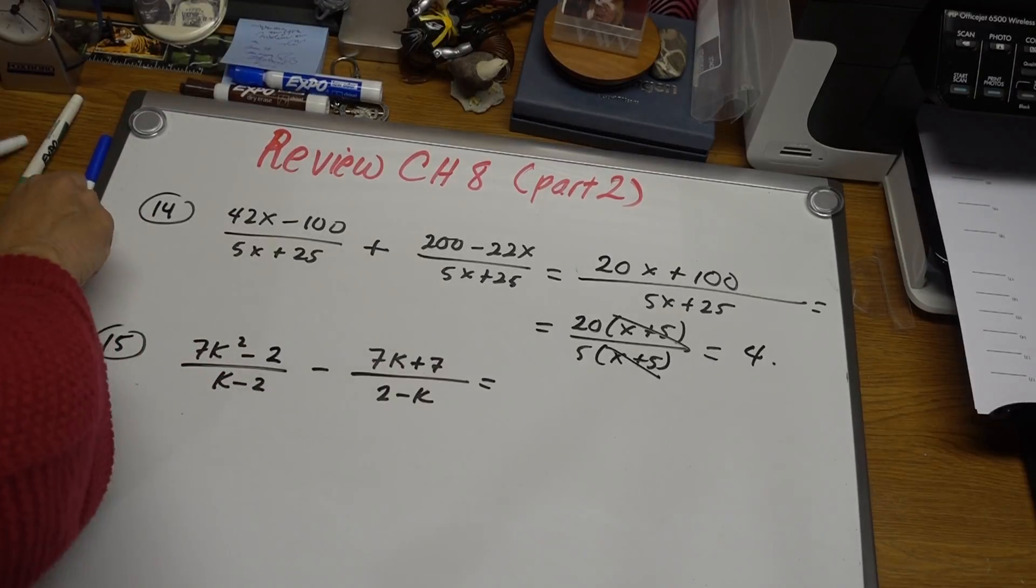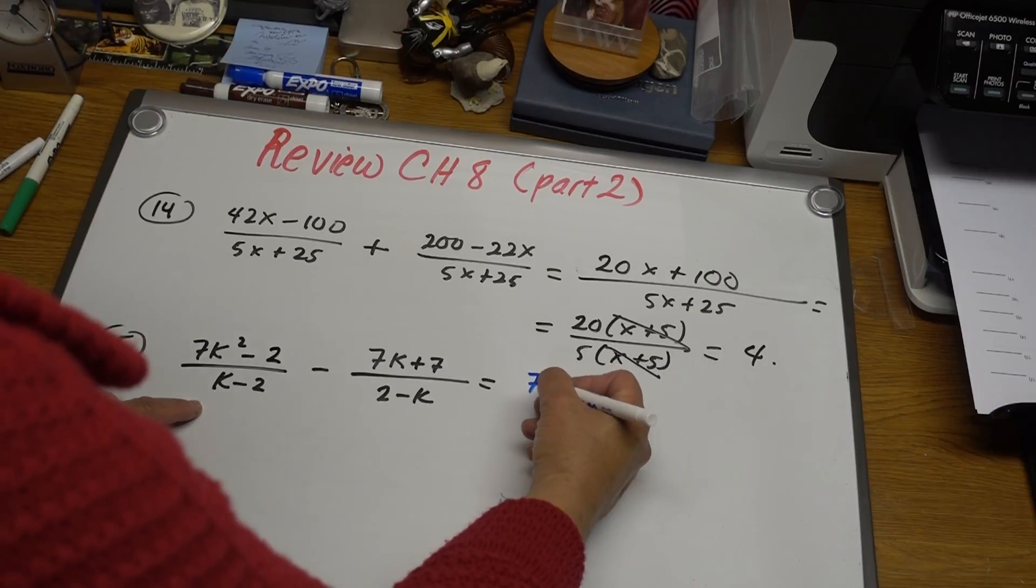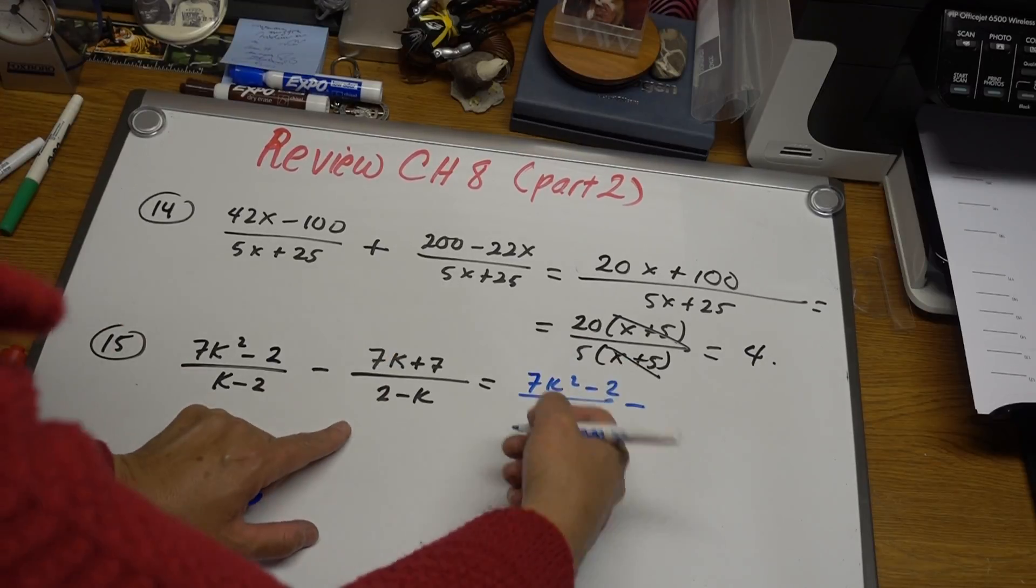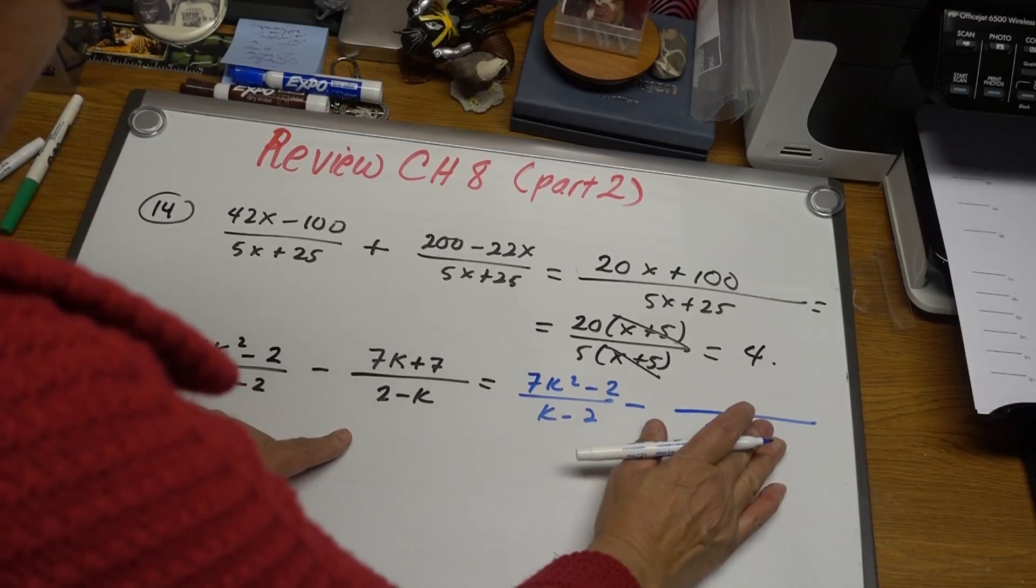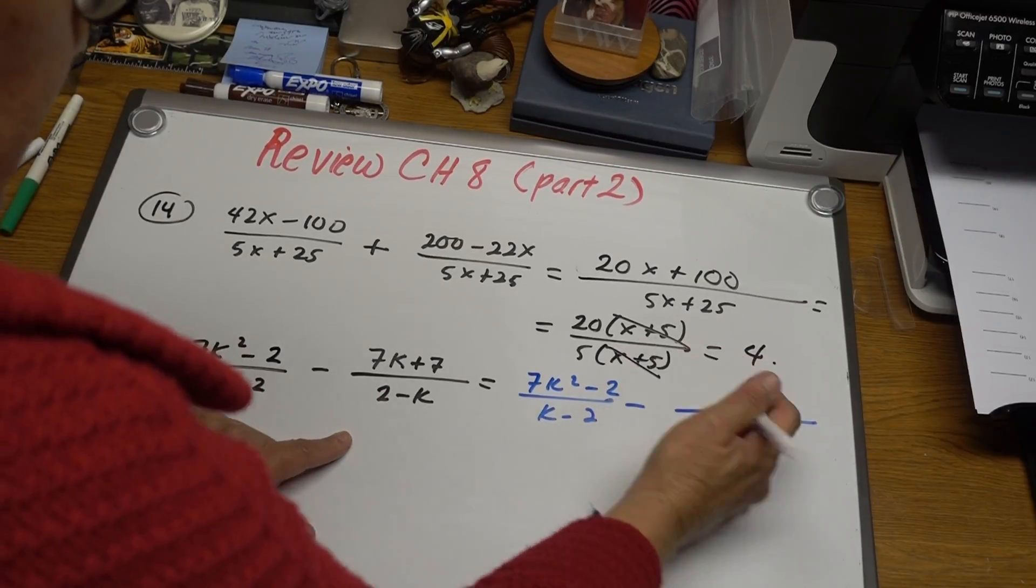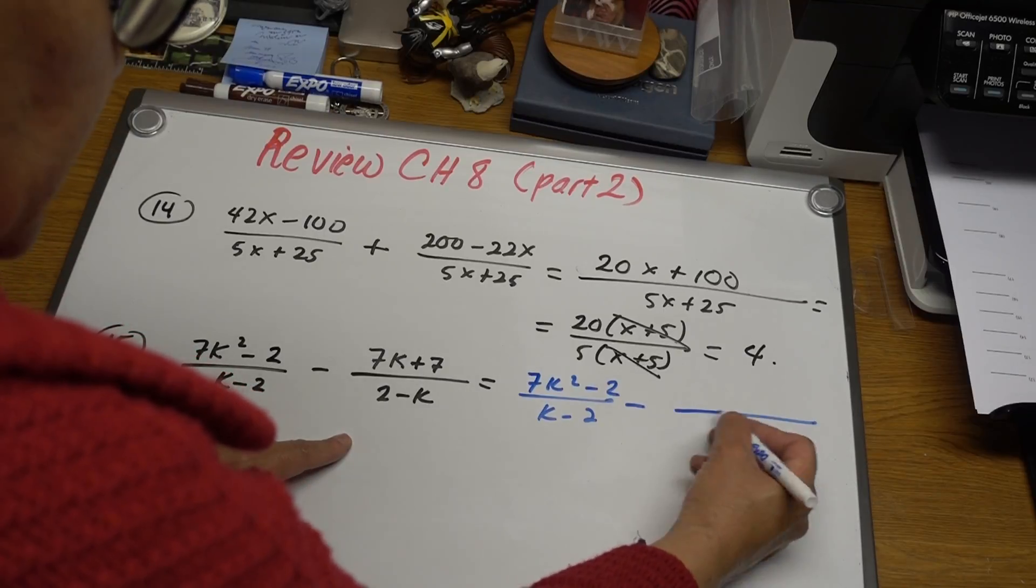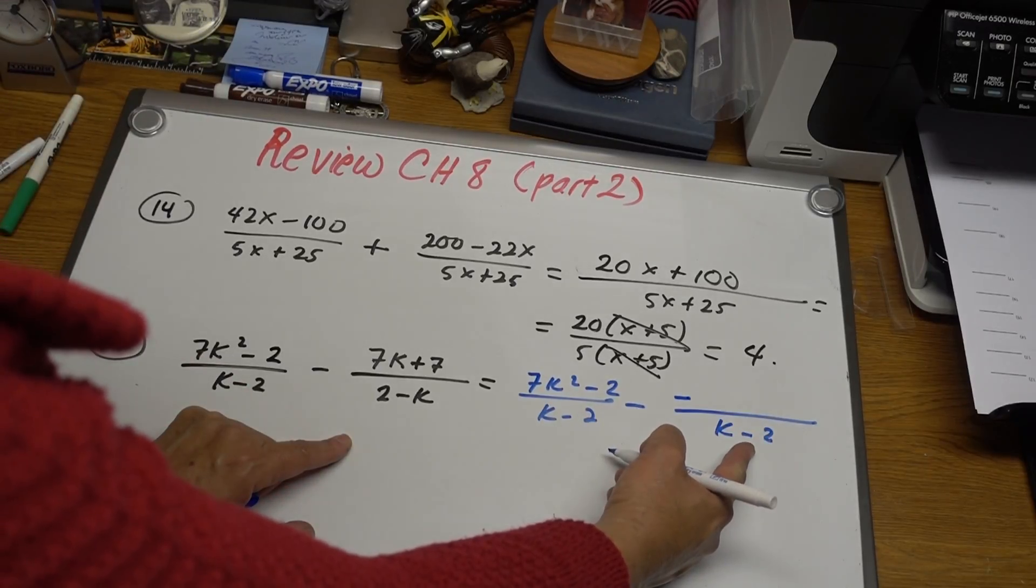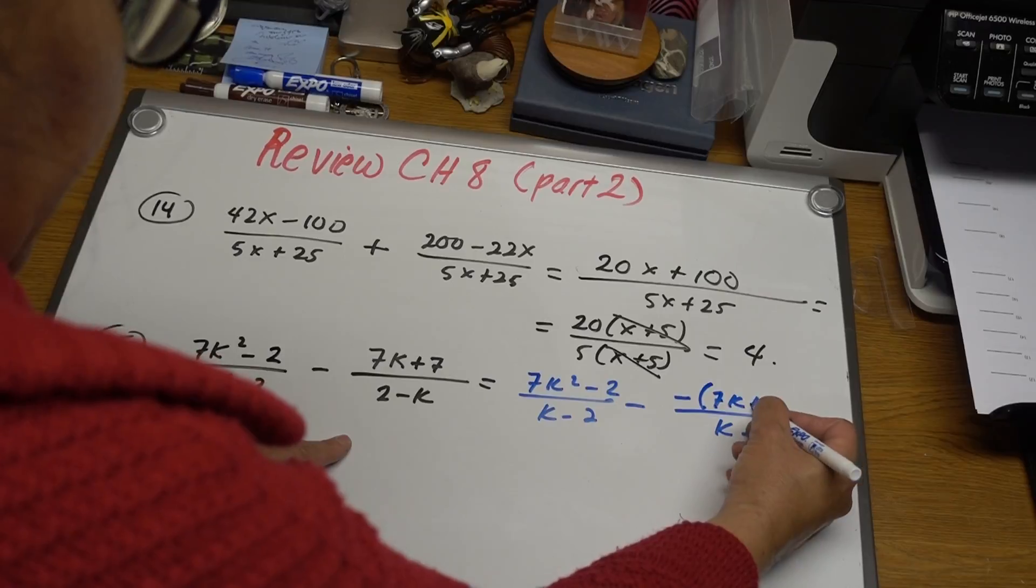Let me change colors here so you don't get confused with the top part. So we have 7k squared minus 2 over k minus 2. This minus is this one. So I'm going to rewrite this part, 2 minus k, as k minus 2. And I'm going to change the sign. You have to put a negative here. Because of the negative, I'm rewriting this as k minus 2, and this one is going to be 7k plus 7.